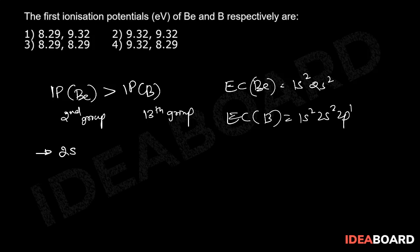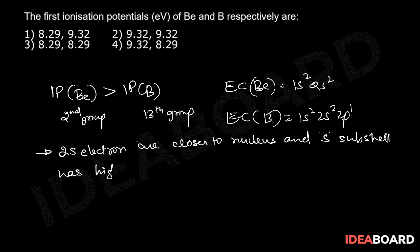The 2s electrons in beryllium are closer to the nucleus, and the s subshell has higher penetration power.